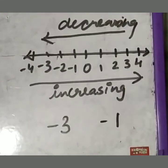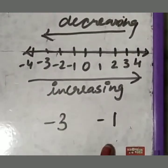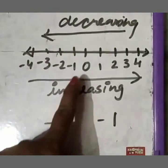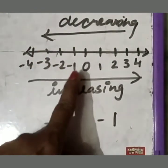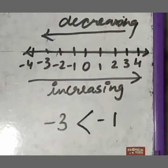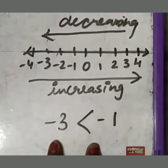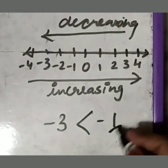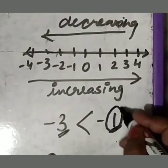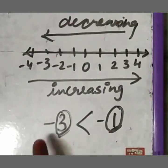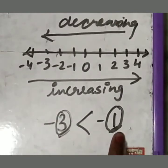Now if I take two negative numbers — suppose minus 3 and minus 1 — I will check which one is on the right side. Minus 3 is here, minus 1 is here. Minus 1 is on the right side, so minus 1 will be greater than minus 3. Whenever you get two negative numbers, you check their numerical values. Whichever has the smaller numerical value will be greater when both have a negative sign.